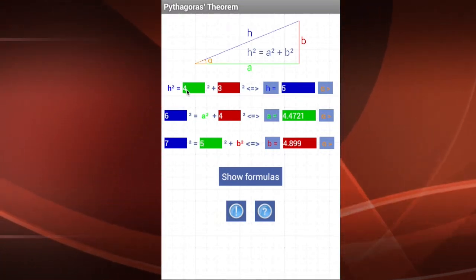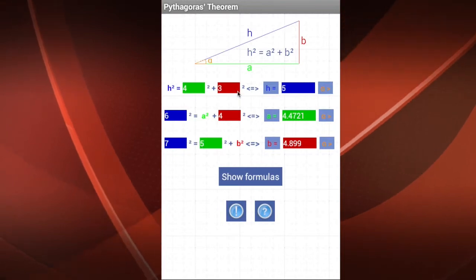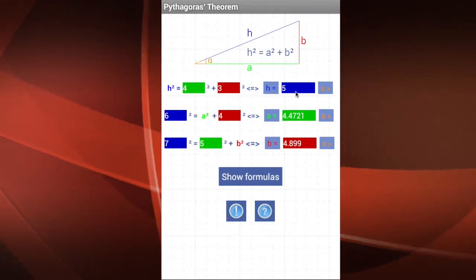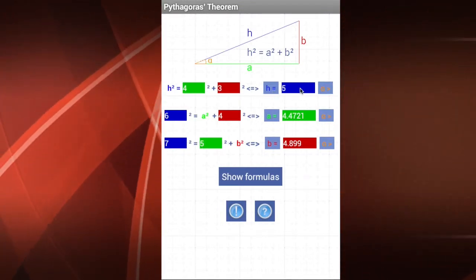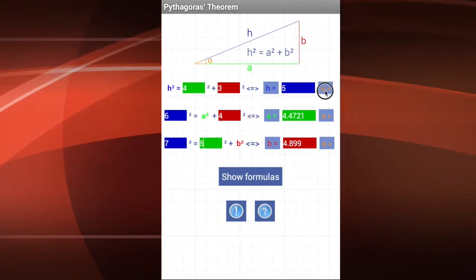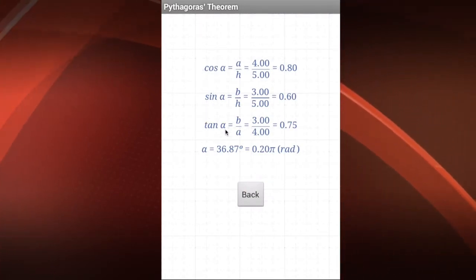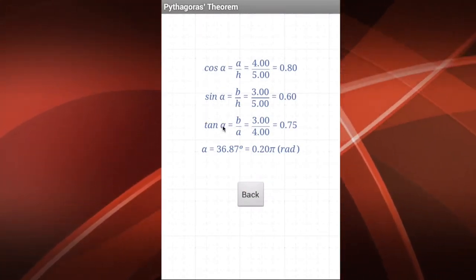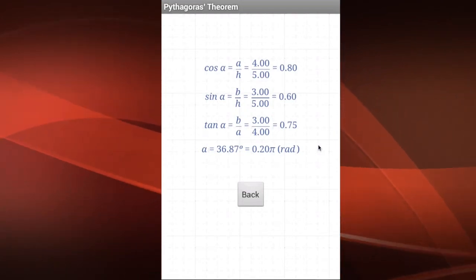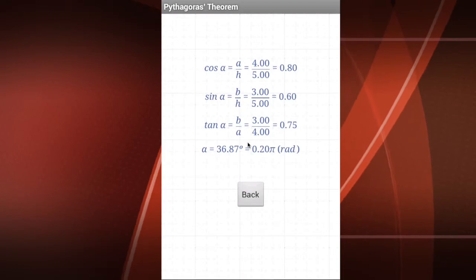For instance, I know that in this line I have sides A and B as 4 and 3, and the hypotenuse is 5. So I click now on this button here, and I get the values of cosine, sine and tangent of alpha, and also the value of the angle in degrees and in radians.